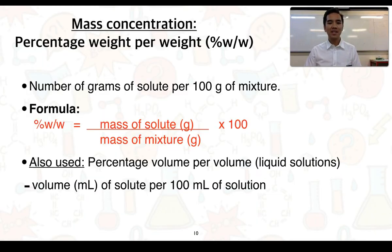We can look at other percentages. In this case, we've got percentage weight per weight, where we're looking at the mass of the solute in grams and also the mass of the mixture or the solution in grams. So it's the number of grams of solute per 100 grams of mixture. The formula looks very similar. We also have percentage volume per volume, which is for liquid solutions, often dealing with liquid solutes and liquid solvents. That would represent the volume in mils of solute per 100 mils of solution.